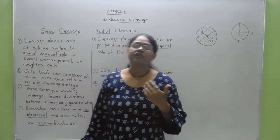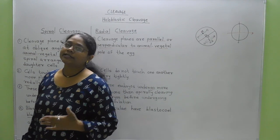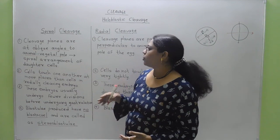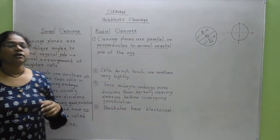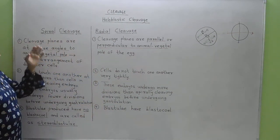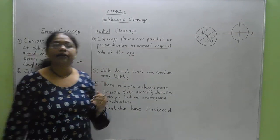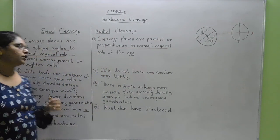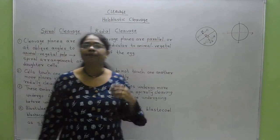Spiral cleavage mainly takes place in mollusks and annelids, and also in some flatworms. In most mollusks, there is a requirement for the production of a spiral arrangement of daughter cells. For this spiral arrangement, the cleavage planes are at oblique angles to the animal and vegetal poles so that the spiral arrangement of blastomeres can be produced.